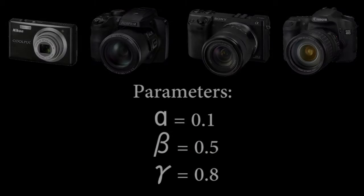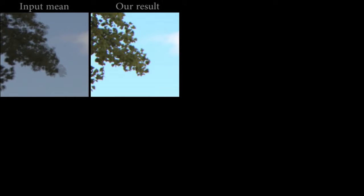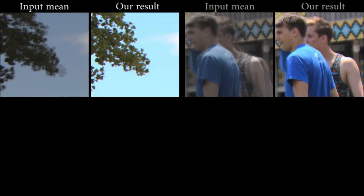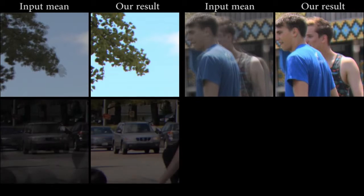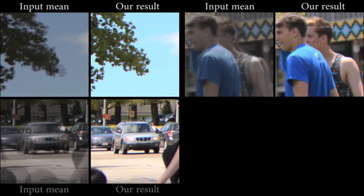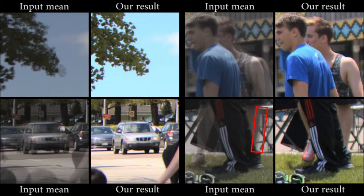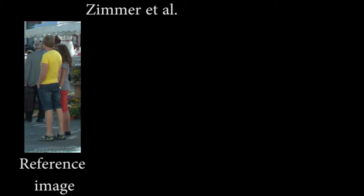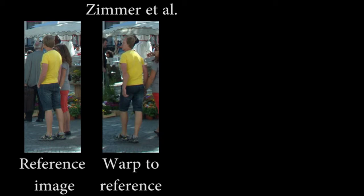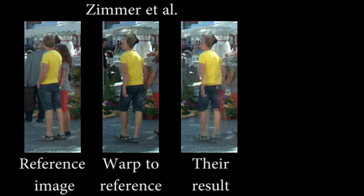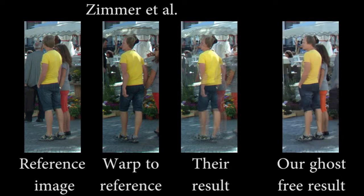We now demonstrate our results. Our method successfully handles small displacements without potentially introducing distortions from flow. Here we see small displacements in the input images, in the trees and in people, and these are reconstructed without ghosting. Compared to the recent method of Zimmer et al., which uses flow to align images, we are robust to unpleasant distortions.